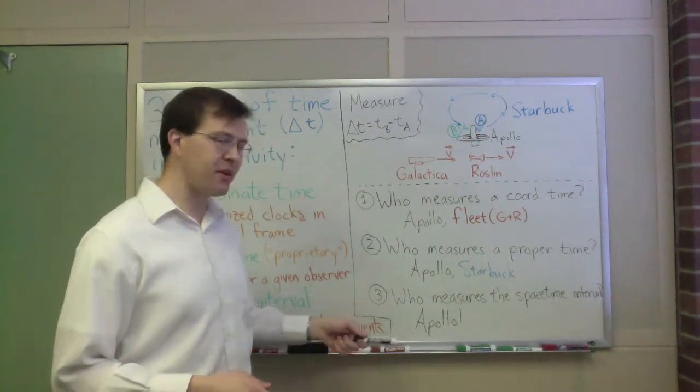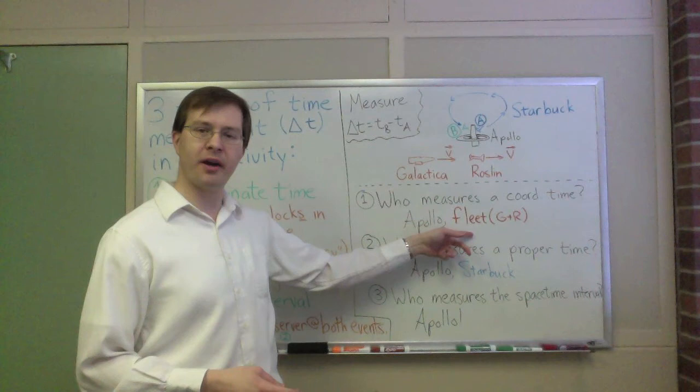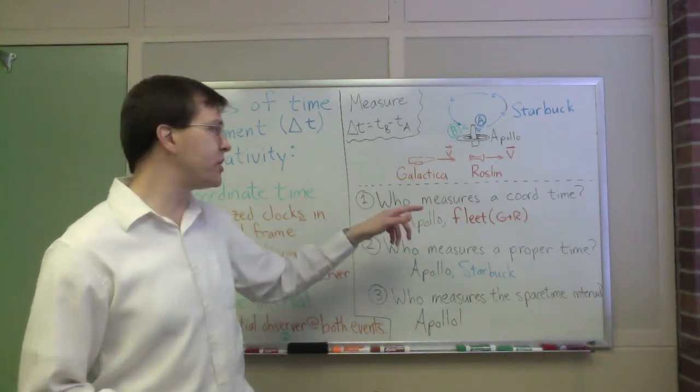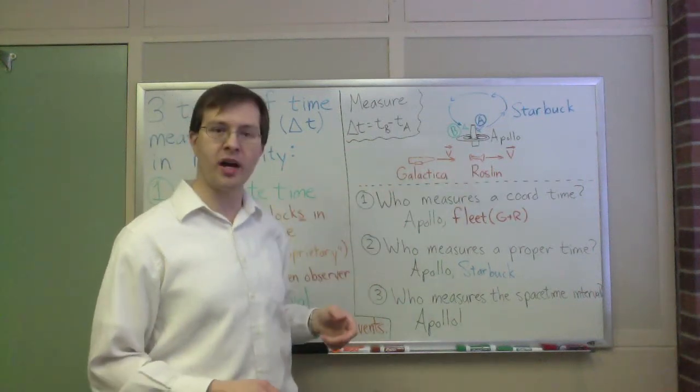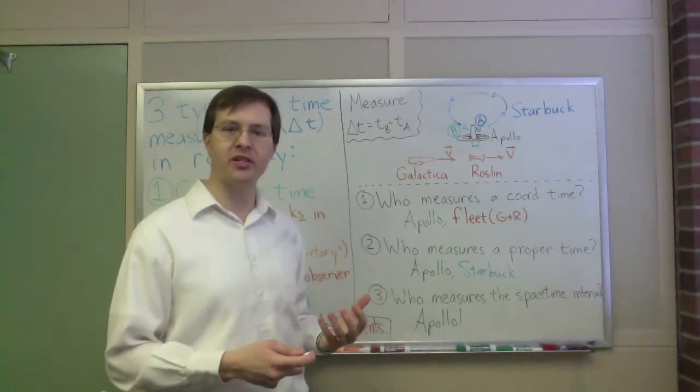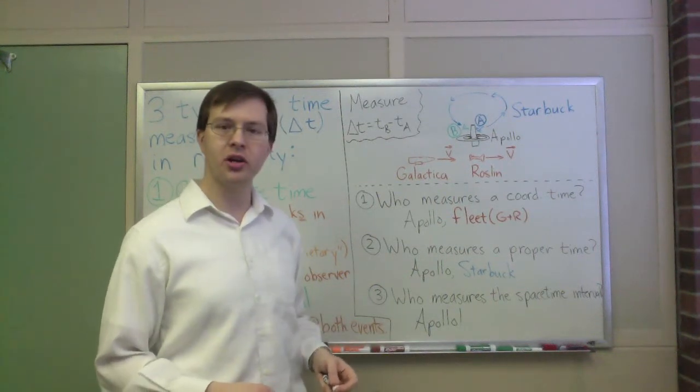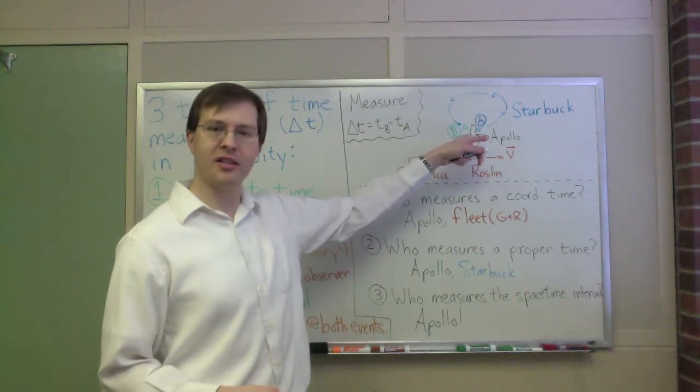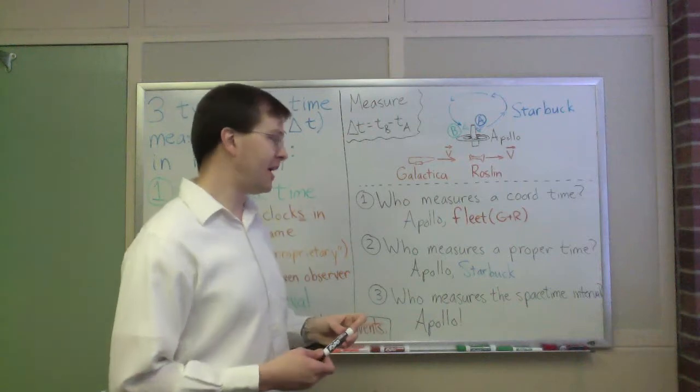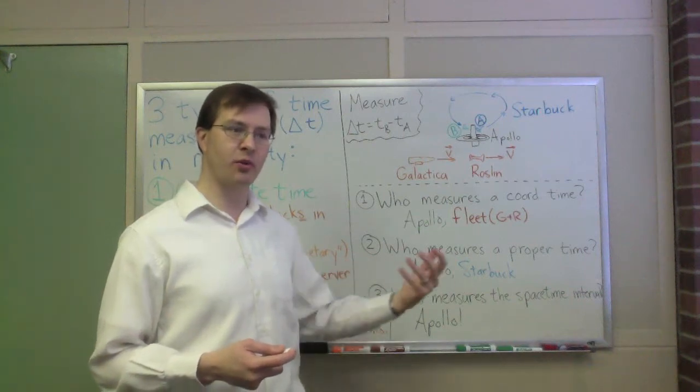The nice thing about the space-time interval is it is something that everyone can agree on. Even if we have, for example, a coordinate time measurement by the fleet, they can, if they need to, work out, if they also know the distance between the Galactica and President Roslin's ship, if they know that distance, then they can use that information and their coordinate time difference, they can use that to compute the unique space-time interval. So you don't need to have someone sitting there on the space station to compute what that space-time interval would be if someone were there. But if you actually want to measure it, it's got to be someone who sees themselves at rest and is present for both events.